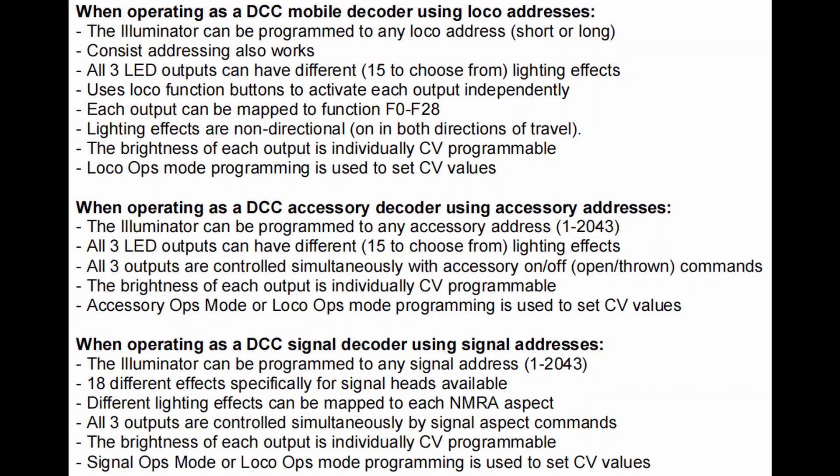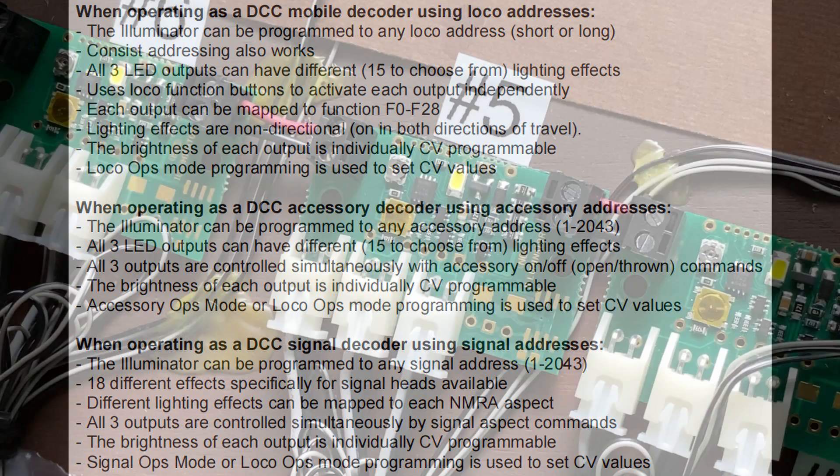You can have different lighting effects on each output, and each output is individually dimmable. The decoder can be either an accessory decoder, a mobile decoder, or a signal decoder. In this video, I am only going to be talking about the accessory and mobile options.